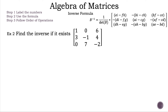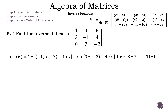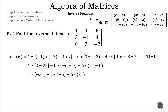Now let's move on to example 2. Find the inverse, if it exists, of our 3 by 3 matrix where in row 1 we have 1, 0, and 6; in row 2 we have 3, negative 1, and 4; and in row 3 we have 0, 7, and negative 2. Now let's find the determinant of B using row 1. Let's multiply the numbers inside the brackets, subtract, multiply, and add and subtract. Our determinant for B is equal to 100.